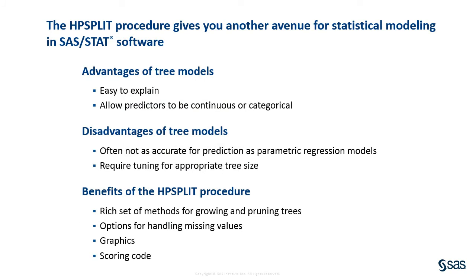In summary, the HP split procedure gives you another avenue to statistical modeling among the many that are already available in SAS Stat. An advantage of tree models is that they are easy to explain, especially if the tree is small. On the other hand, tree models may not be as accurate for prediction as parametric regression models, and the tree size must be tuned to avoid overfitting. The HP split procedure provides a wealth of methods for growing and pruning trees, along with options for handling missing values, creating graphs, and producing scoring code.